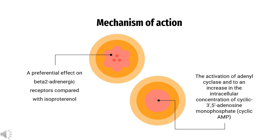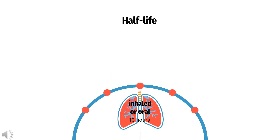Increased cyclic AMP levels are associated with relaxation of bronchial smooth muscle and inhibition of release of mediators of immediate hypersensitivity from cells, especially from mast cells.